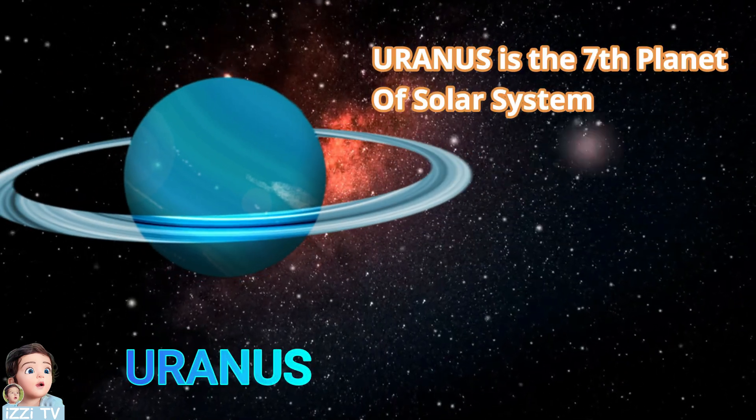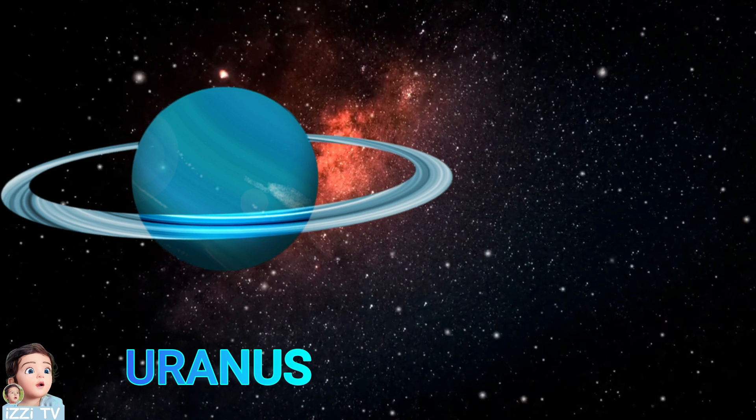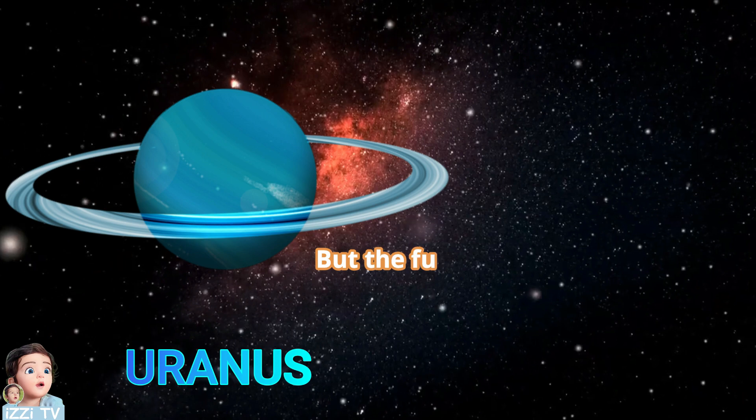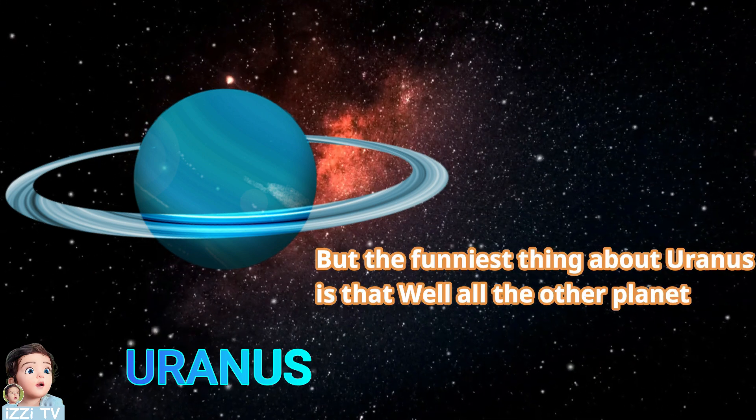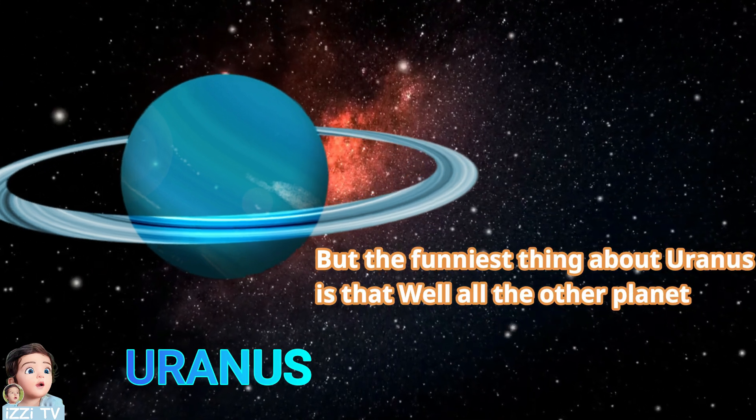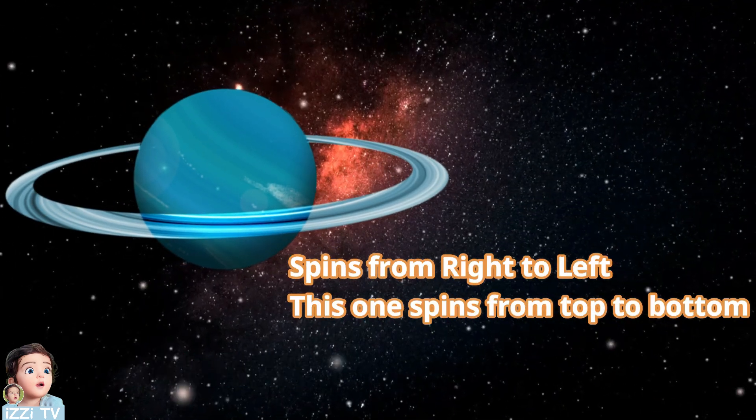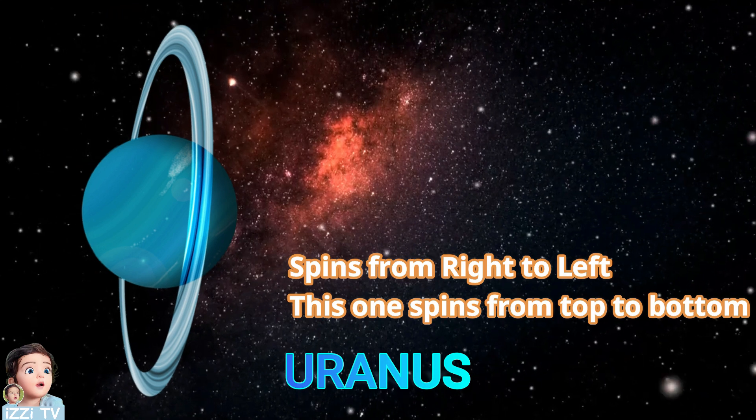Uranus is the seventh planet of the solar system. It is a deep blue color and also has rings. But the funniest thing about Uranus is that, while all the other planets spin from right to left, this one spins from top to bottom.